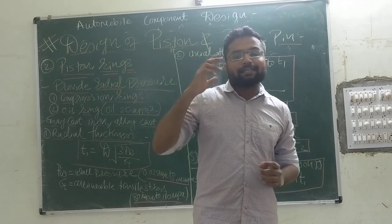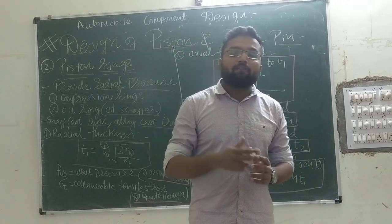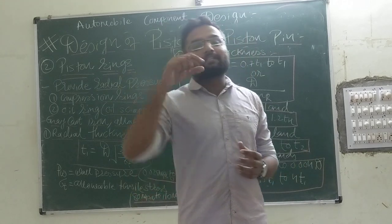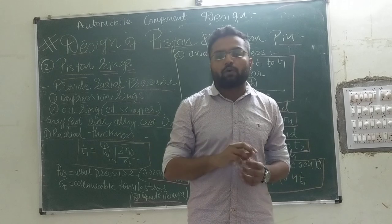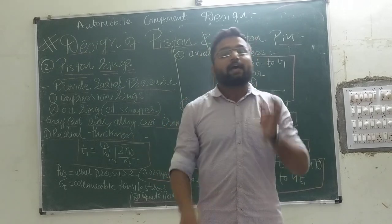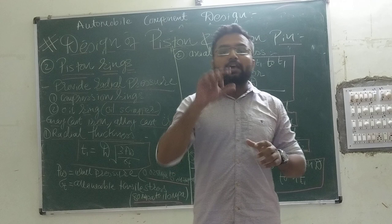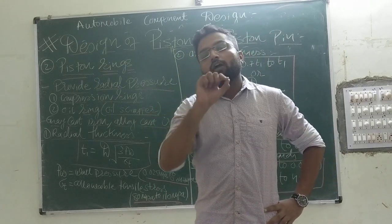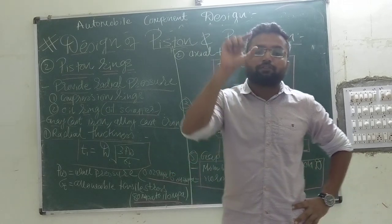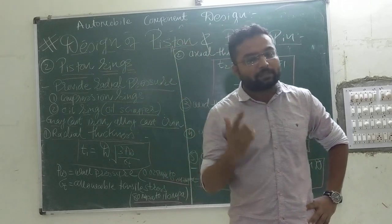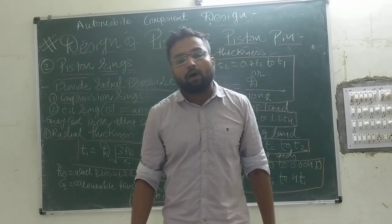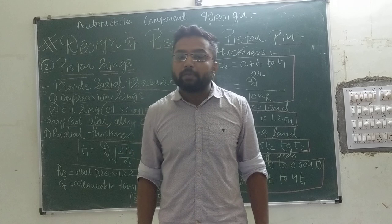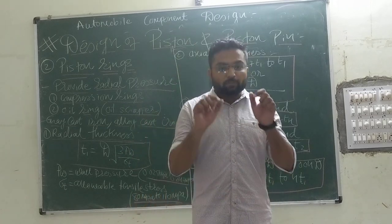We are going to design radial thickness and axial thickness of rings, then top length B1 — which is the distance from the ring section to the top edge of our piston. After that, we are going to discuss the distance between two consecutive rings, which is B2, and ultimately we will determine the gap, because this ring is open at one end.